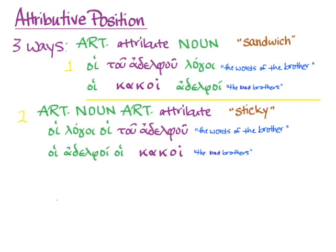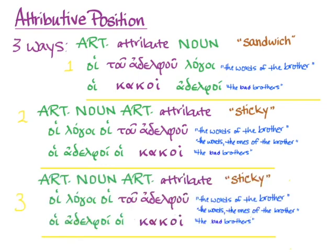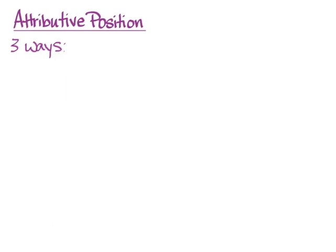When I first introduced this kind of attributive position, sometimes the sticky sort can be thought of in more of an afterthought usage, more like 'the words, the ones of the brother.' But either way is correct, and it can be just as neutral as the sandwiching kind. The third sort of attributive position simply takes the first article off — it is still sticky, with the article after the noun, but no first article before the noun. So logoi hoi tu adelphu means 'the words of the brother,' and adelphoi hoi kakoi means 'the bad brothers,' or perhaps 'the brothers, the bad ones.'